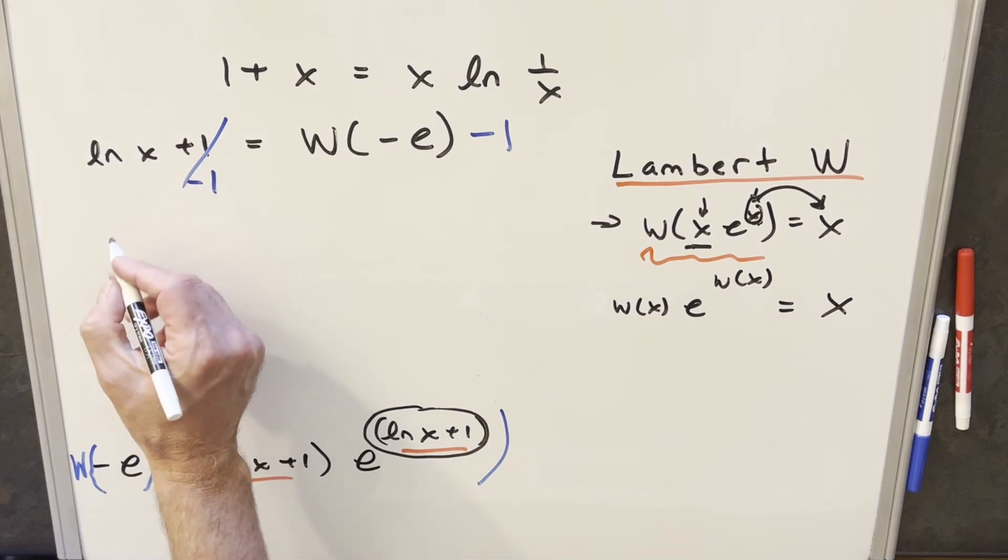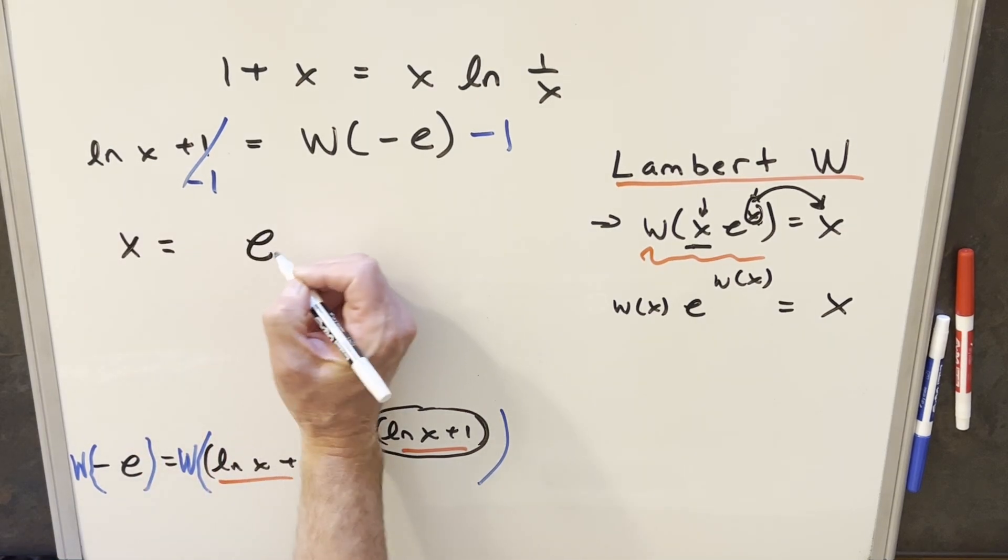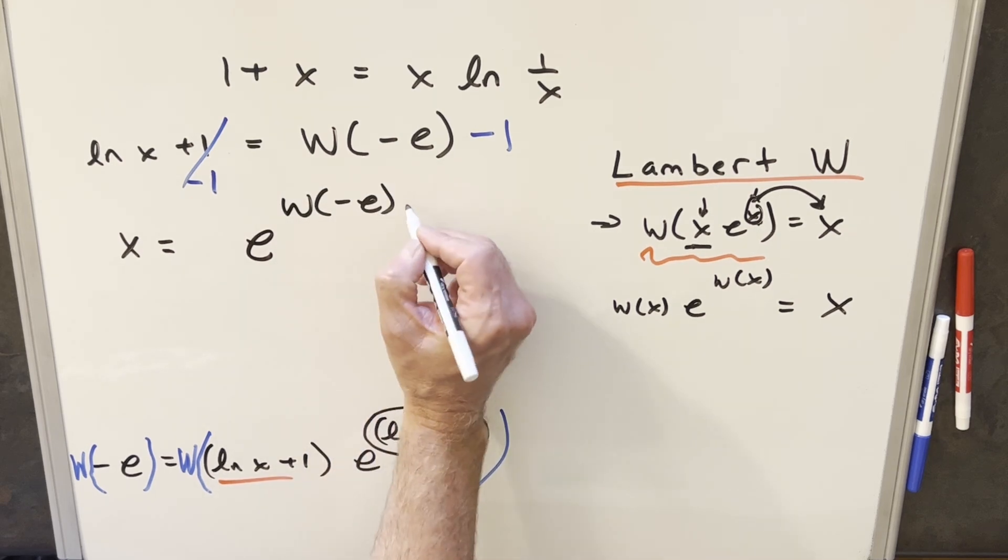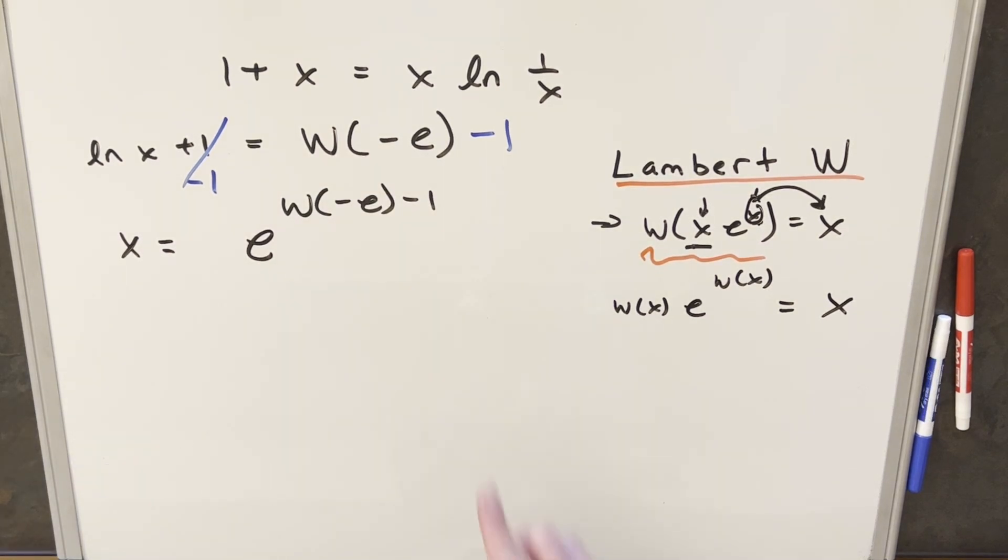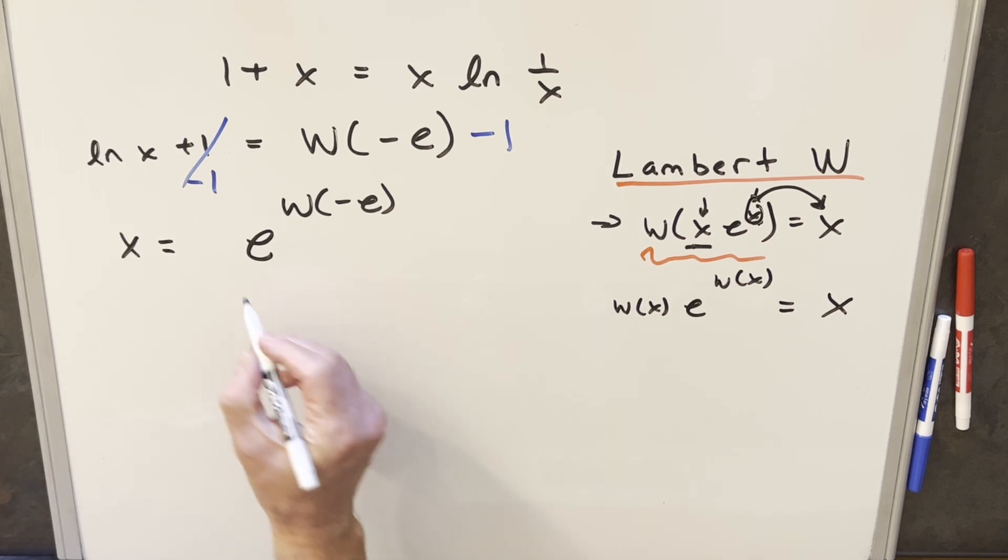And then in order to isolate our x, we can just use the log properties and say x is going to be equal to e to this thing, which is Lambert W minus e minus 1. But for this minus 1 here, I can separate this off and think of it as e to the minus 1. But e to the minus 1 is like 1 over e. So let's bring it down here into the denominator.